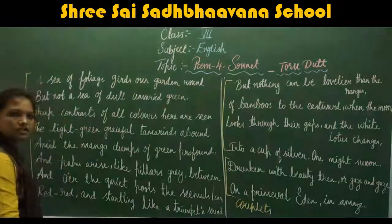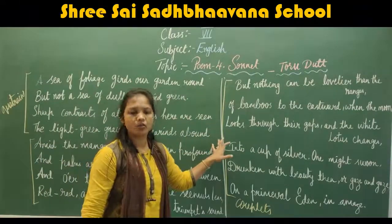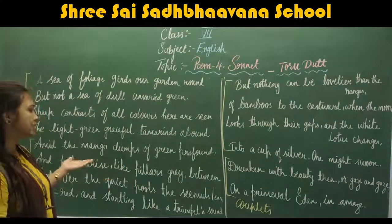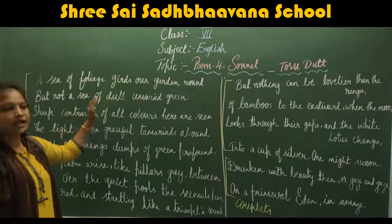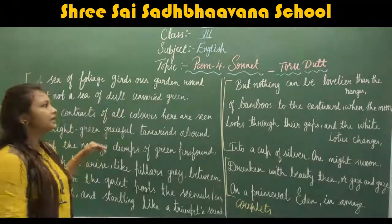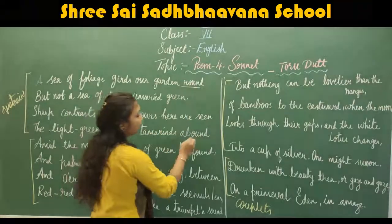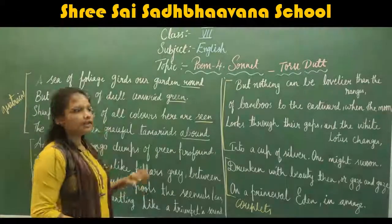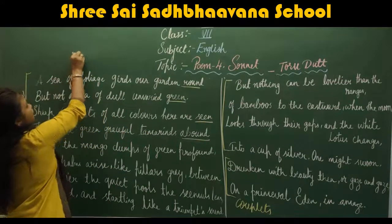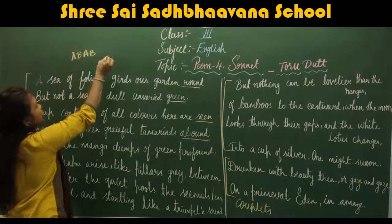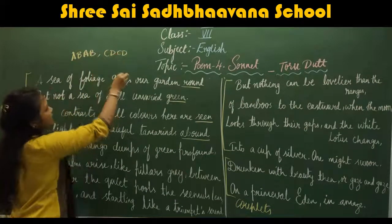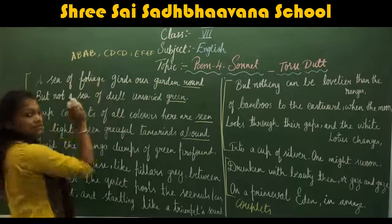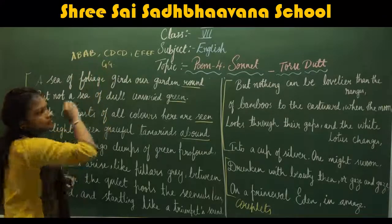The special thing about a sonnet is the rhyming scheme. In the sonnet, the first line rhymes with the fourth line and the second line rhymes with the third line — this is written as A-B-A-B. The next quatrain follows the pattern C-D-C-D, then E-F-E-F, and the last two lines rhyme as G-G.